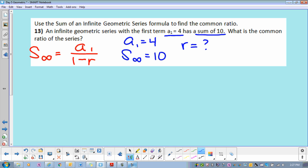So let's see. Sum, that's 10, equals a sub 1, which is 4, all over 1 minus r. Then I need to solve. You have a couple of options here. You can make the other side into a fraction and just cross-multiply.